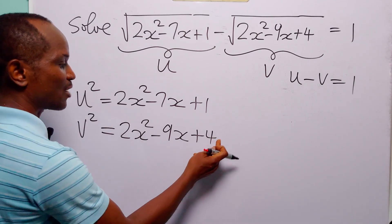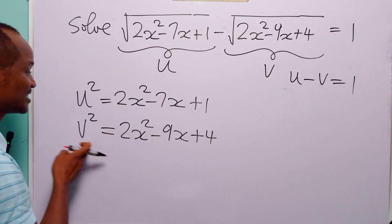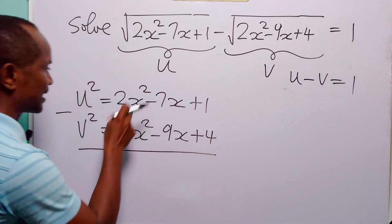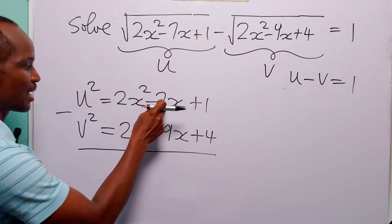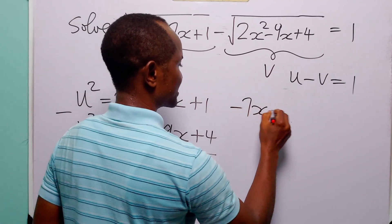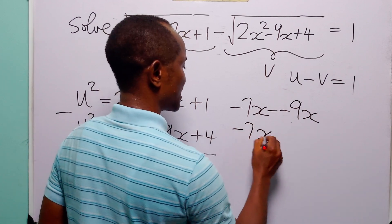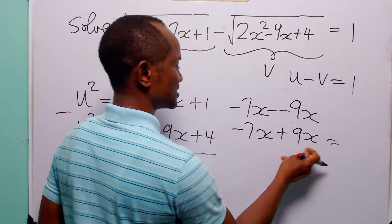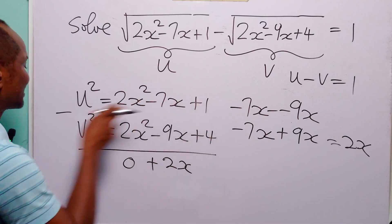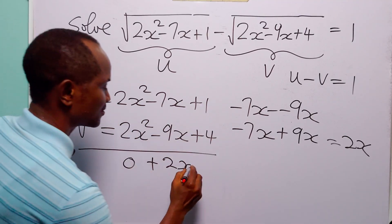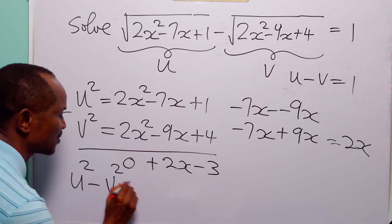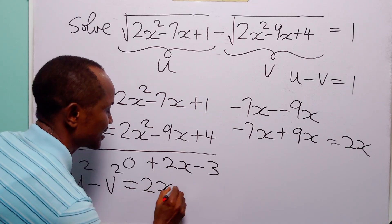Now the next thing we are going to do is subtract v squared from u squared. So 2x squared minus 2x squared is 0. Minus 7x minus minus 9x is simply minus 7x plus 9x, which is equal to 2x. And 1 minus 4 is equal to minus 3. So from here we have that u squared minus v squared is equal to 2x minus 3.